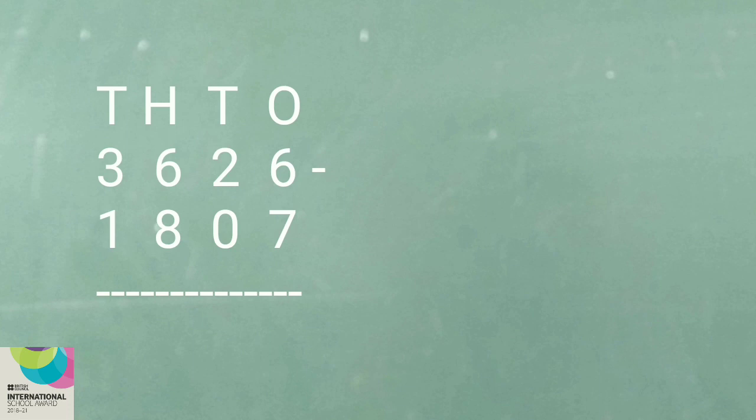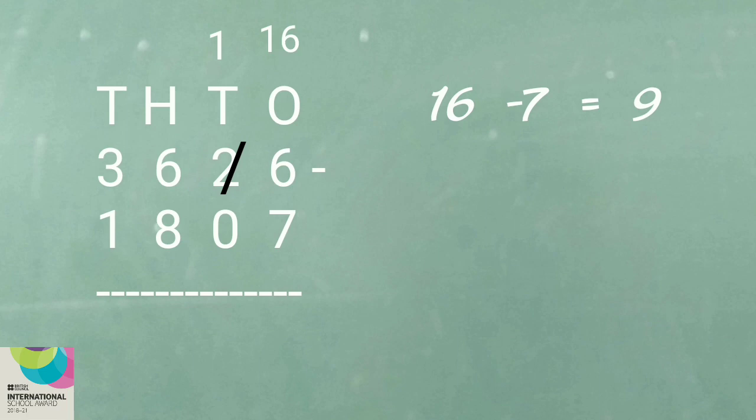The first step is subtracting the ones place digits, that is 6 minus 7. Since it is not possible, borrow one from the tens place. So the ones place digits become 16. And now subtract — that is 16 minus 7, which is equal to 9.